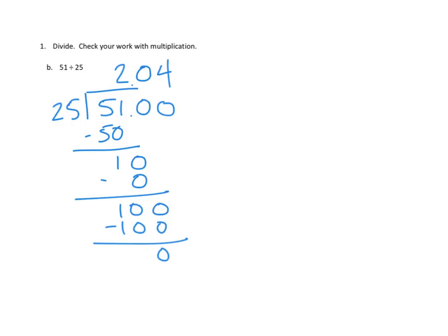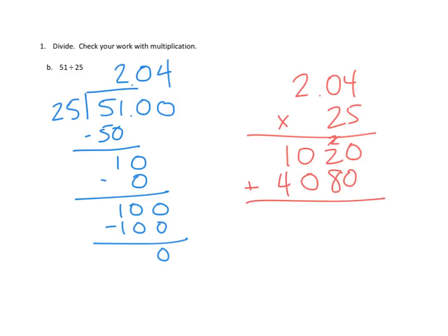To see if we're right, I'm going to switch to red and try to do that over here. Two and four hundredths times 25. We're going to have to do our two partial products to see if this works. Let's see. Five times four is 20. So, that's zero goes here. Two goes on the line. Five times zero is zero. Two times zero plus two more is two. And five times two is ten. There's one partial product.